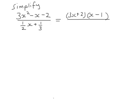The denominator has got two different fractions with a half and a third. Let's put everything over 6, so that's 3x over 6 plus 2 over 6.